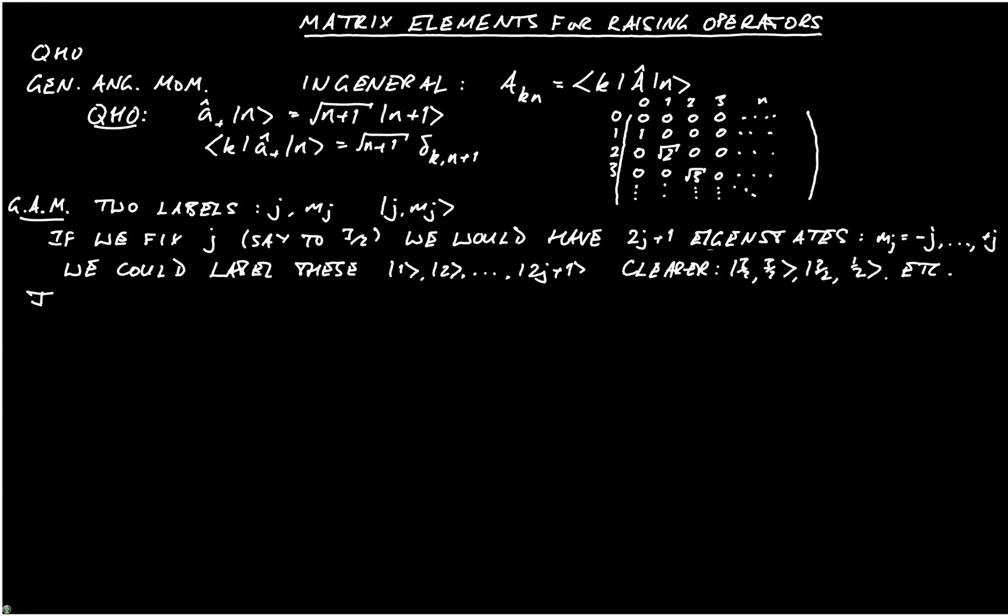We know we derived the action of j+ the raising operator on j, mj, is to give us h-bar times the square root of j into j plus 1 minus m into m plus 1, multiplying ket j mj plus 1.